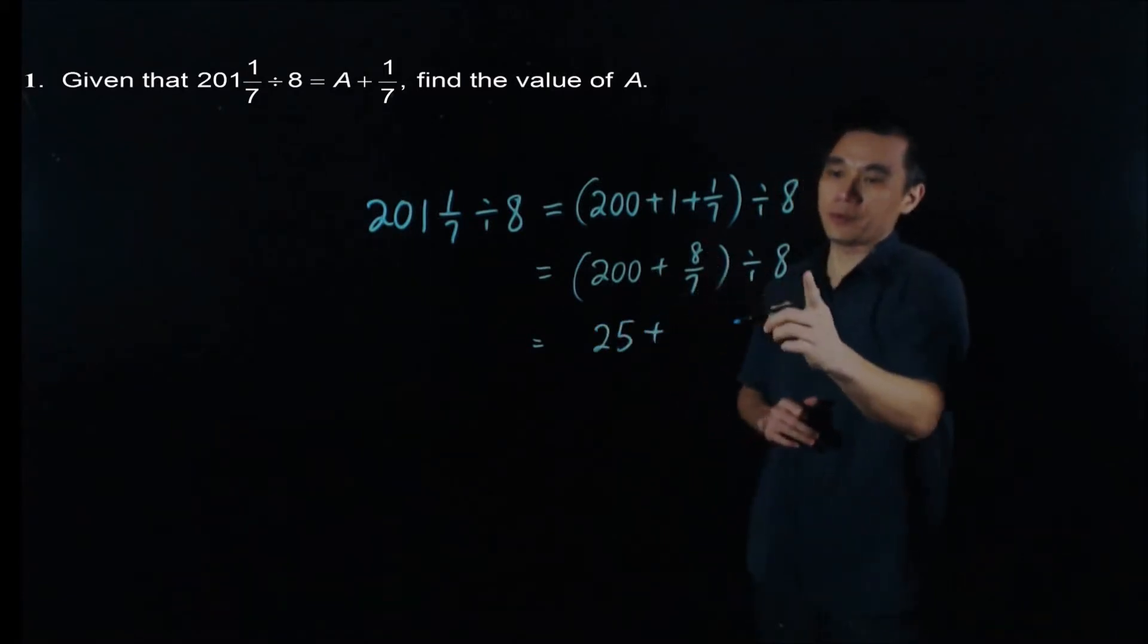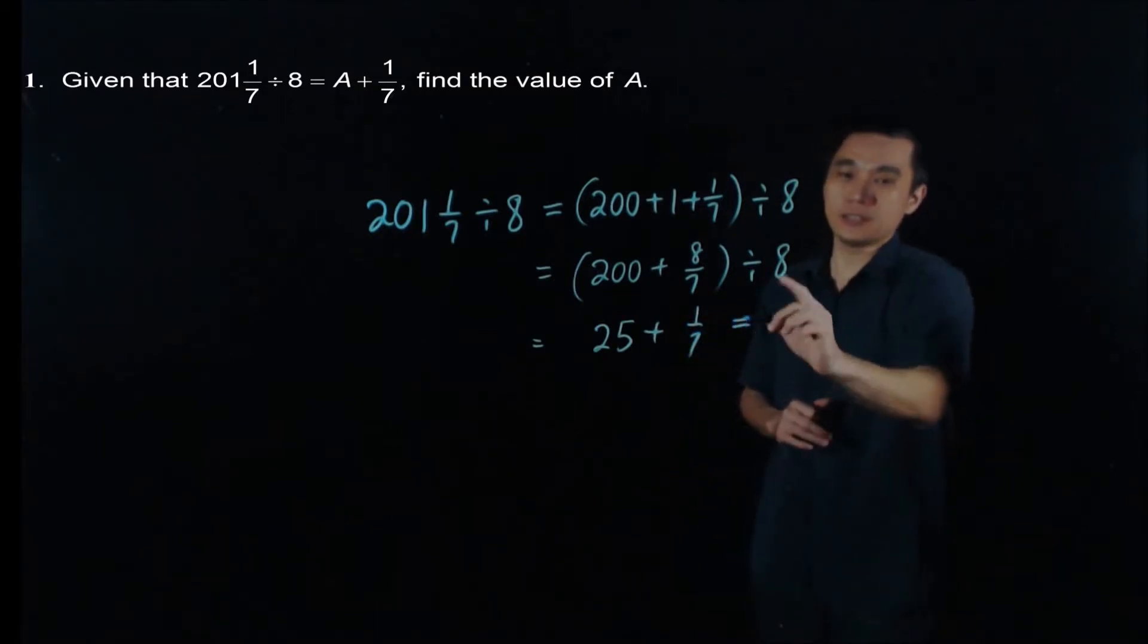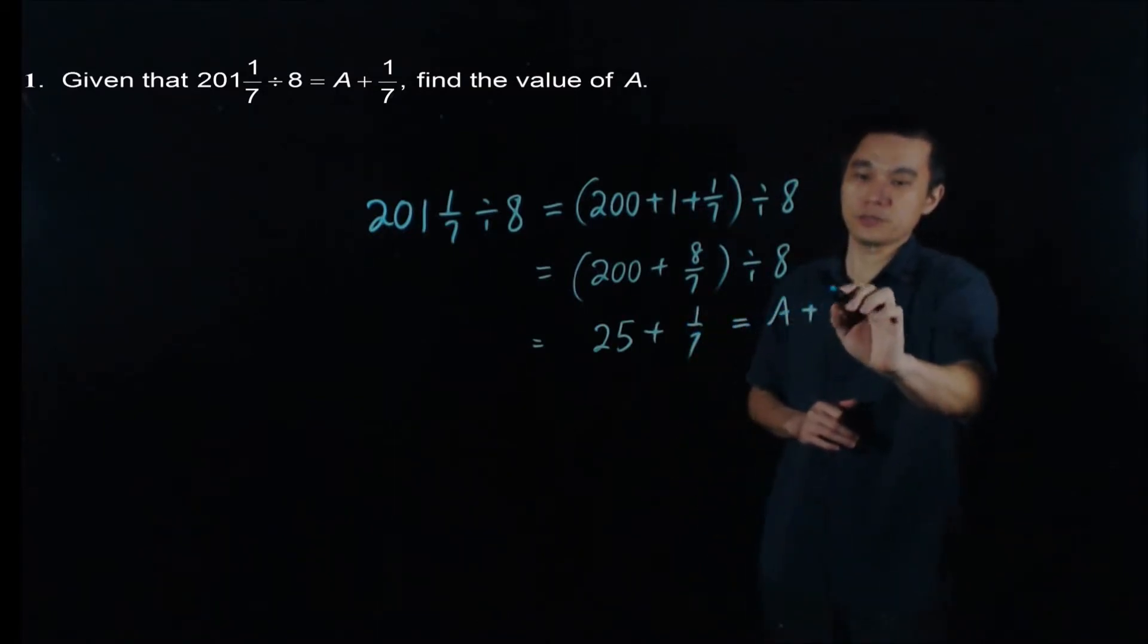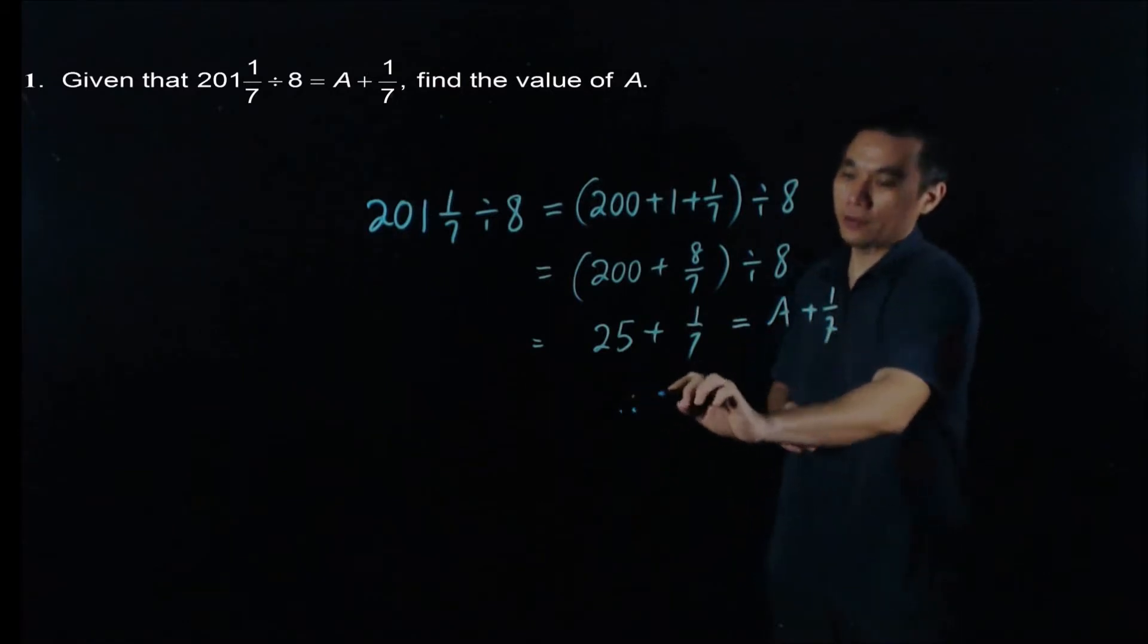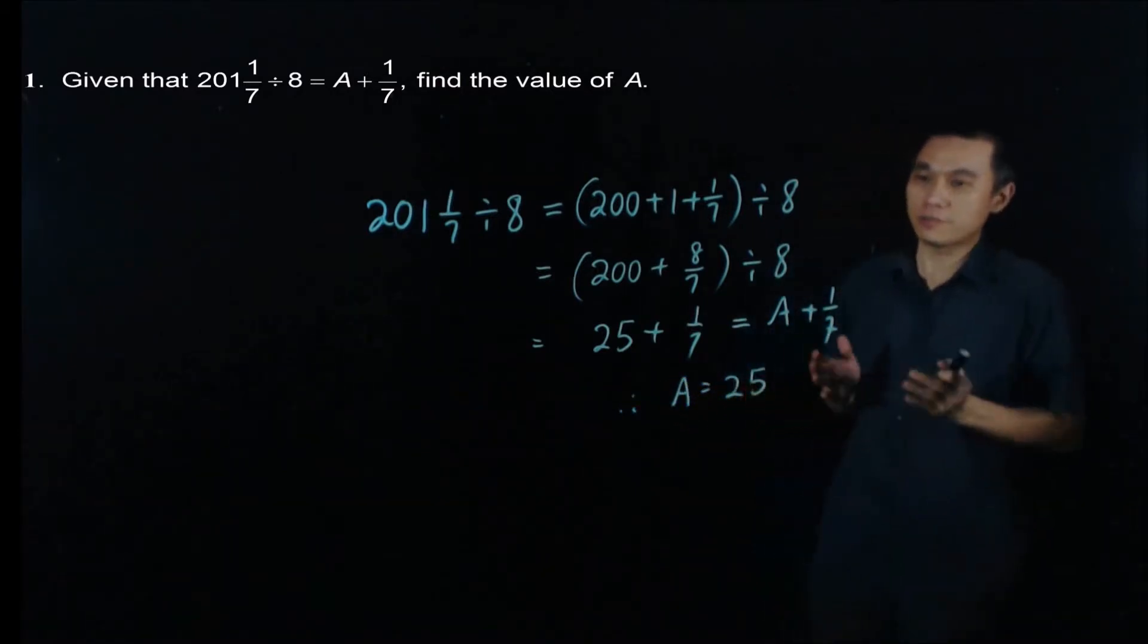8/7 divided by 8, you have 1/7. And it's given that this is A plus 1/7, and therefore A equals 25. And we solve the first question.